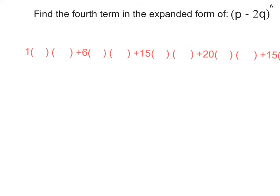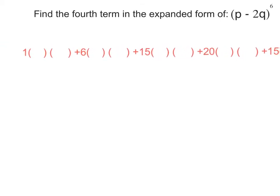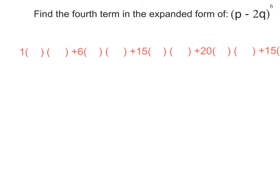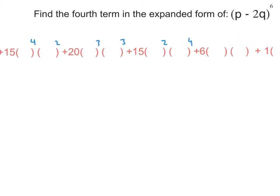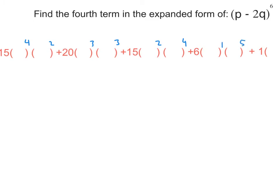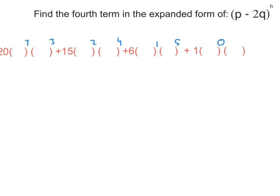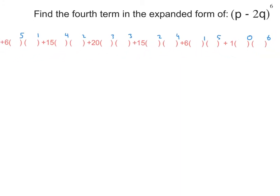We also need to fill in the powers. Since we know that the max power is six, we begin with that max power of six on the first parentheses, which means the second parentheses has a zero. Then it drops to five and the other increases to one, then four and two, three and three, two and four, one and five, and at the very end it's completely flipped: zero on the first and six on the second.